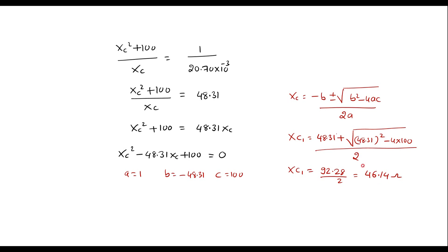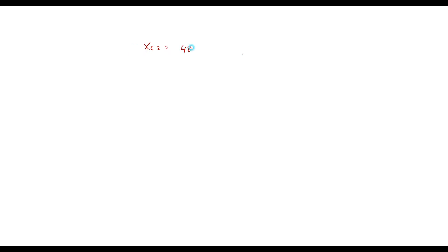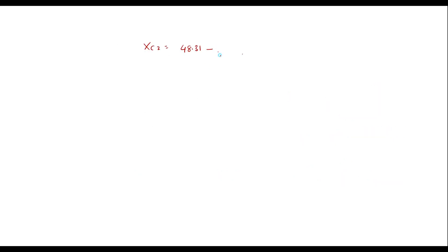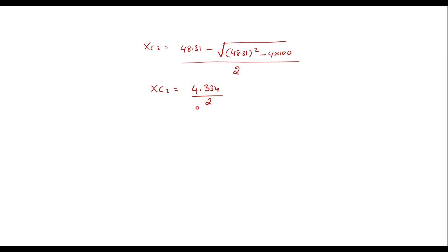Similarly, taking the minus root: XC2 = (48.31 − √(48.31² − 4×100)) / 2. The numerator gives 4.334 divided by 2, therefore XC2 is equal to 2.167 ohm.